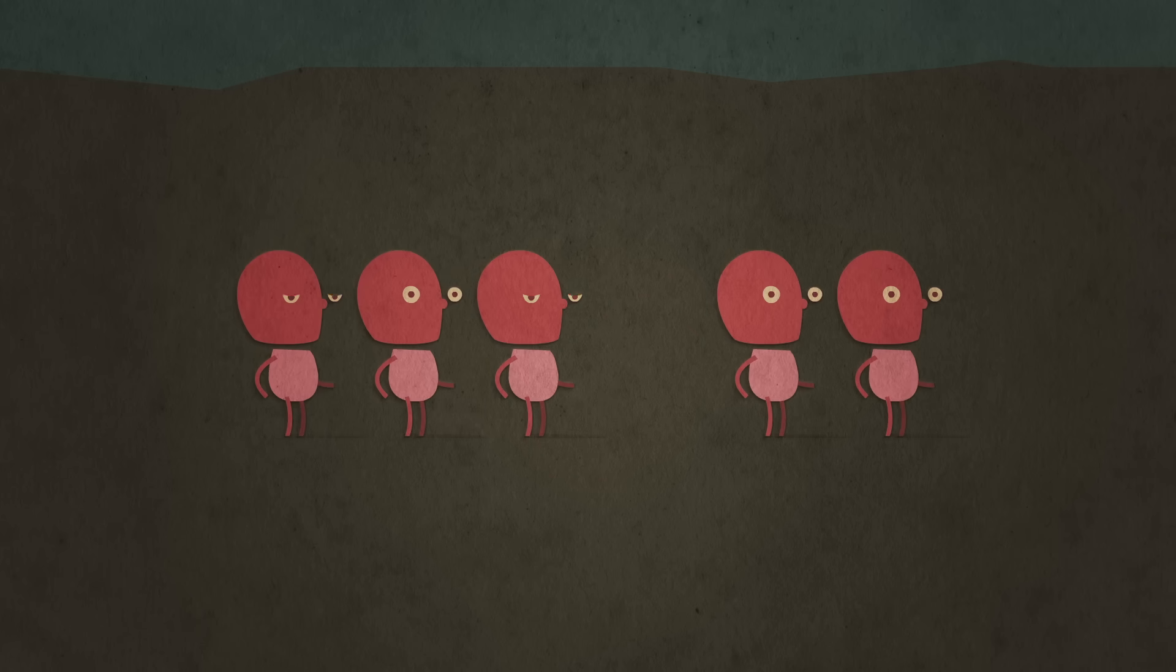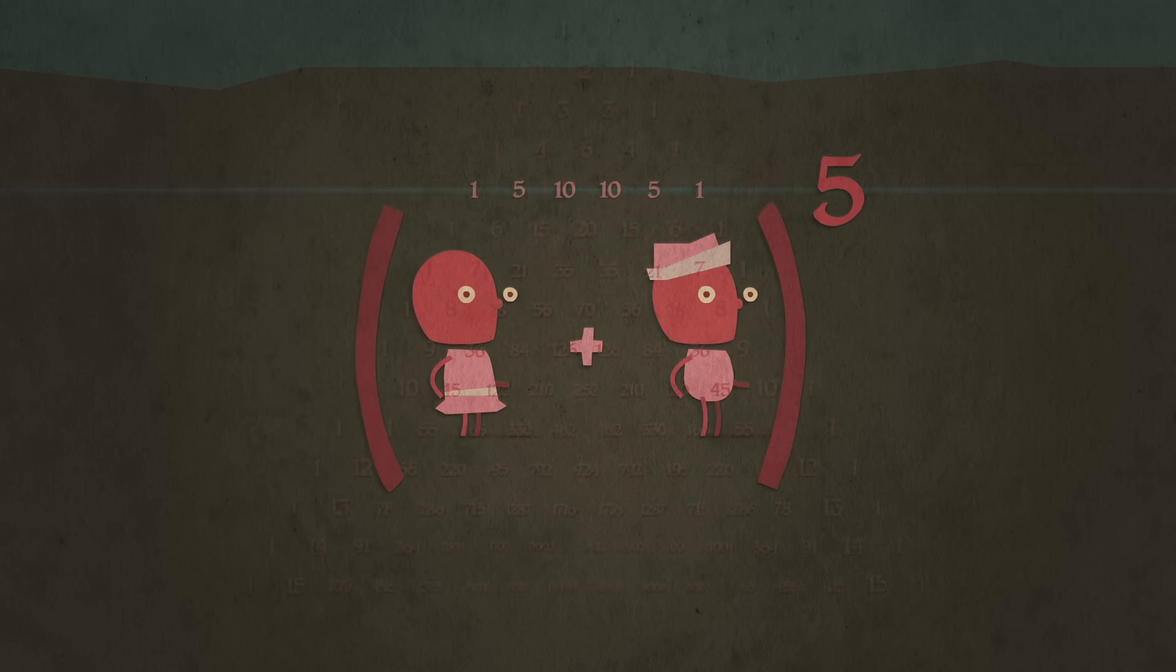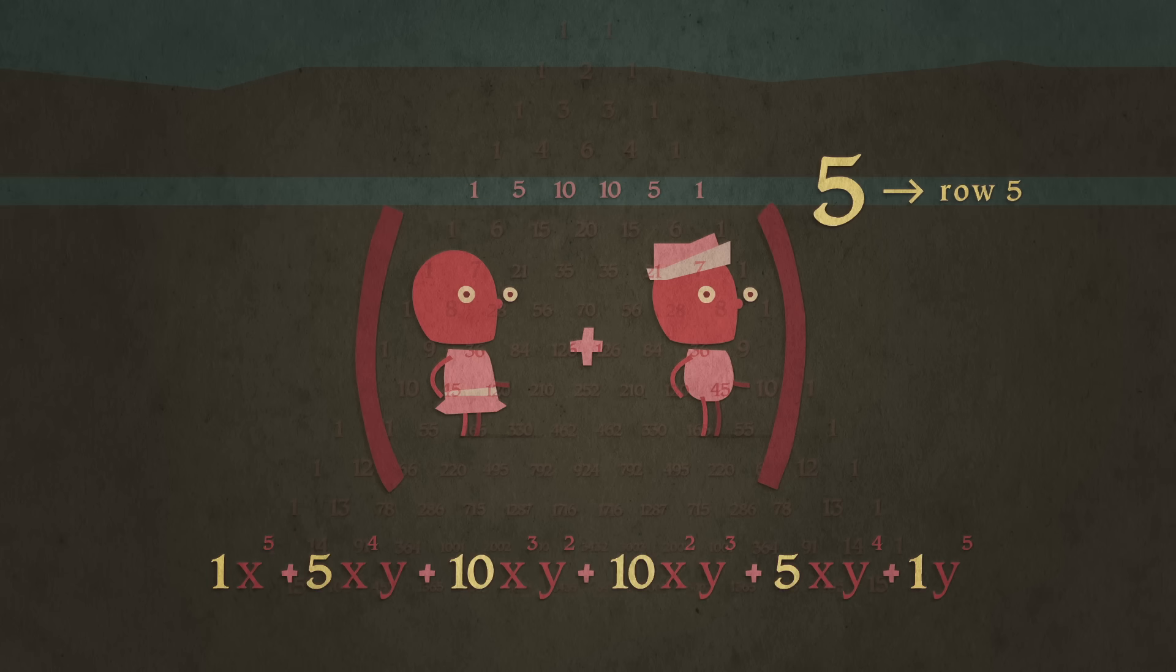Say you want to have five children and would like to know the probability of having your dream family of three girls and two boys. In the binomial expansion, that corresponds to (girl + boy) to the fifth power. So we look at row five, where the first number corresponds to five girls, and the last corresponds to five boys.